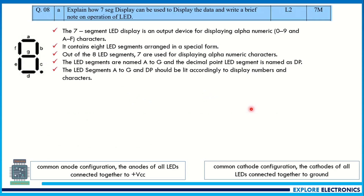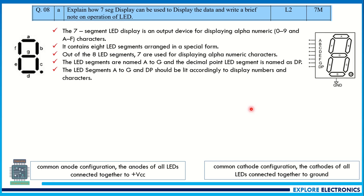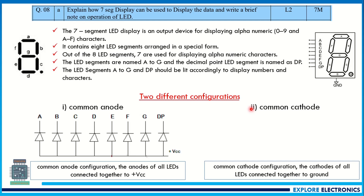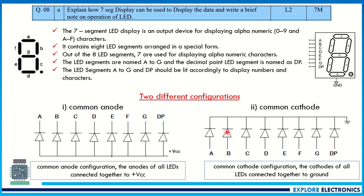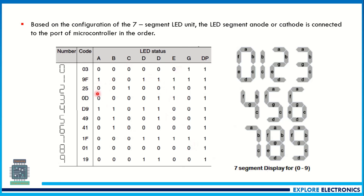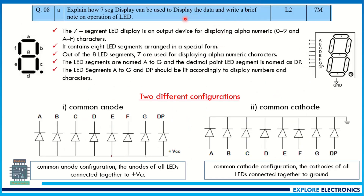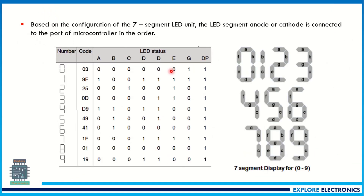Explain how a seven segment display can be used to display the data and write a brief note on the operation of LED. This is a choice question — the eighth question. You can write 7ABC or 8ABC. First, we need to write about the LED, then write the two different configurations: common anode connection and common cathode connection. To display a particular value, number, or data, we need to have the corresponding code — the LED status table. This is how you need to explain the display of data using the seven segment LED. We need to write this table, explain the code, and show the values that are going to be displayed as numbers.